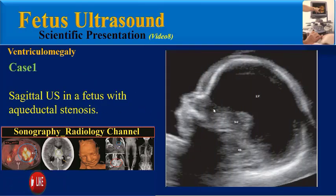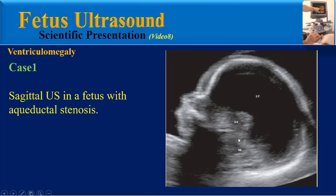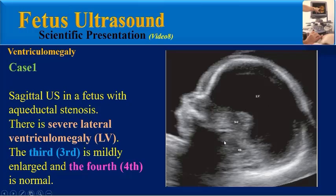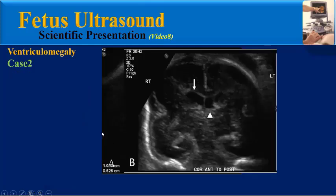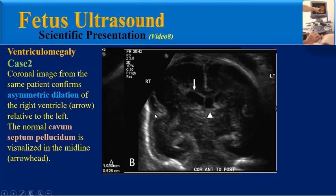Teaching Case 1: A sagittal ultrasound image in a fetus with aqueductal stenosis shows severe lateral ventriculomegaly. The third ventricle is mildly enlarged and the fourth ventricle is normal. Case 2: An axial scan at the level of the atria demonstrates isolated mild right ventriculomegaly. The choroid plexus dangles against the lateral atrial wall, and there is a 7 mm gap between the medial ventricular wall and the normal choroid plexus.